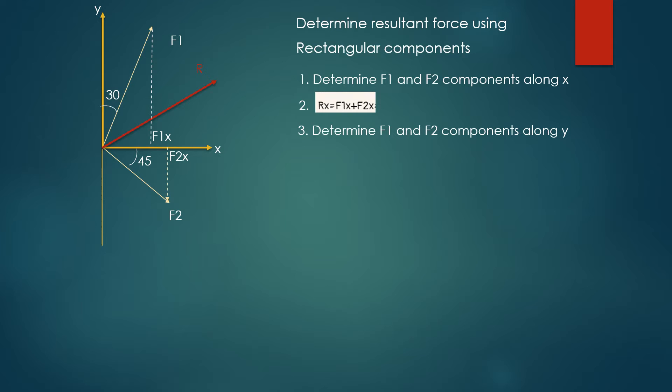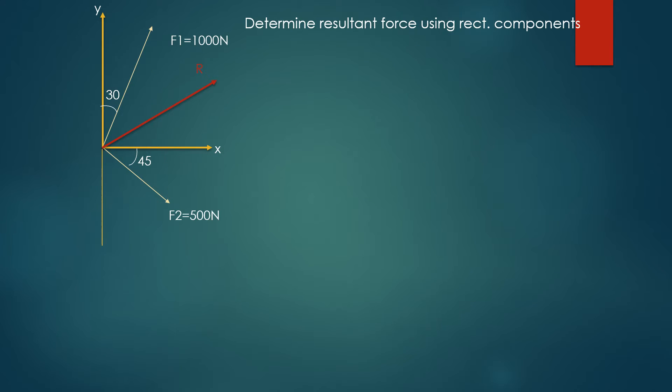Then we determine F1 and F2 components along the y-axis. Taking sign into consideration, you can write Ry equals F1y minus F2y. As you see, F1y and F2y are in opposite directions, so we use negative. The size of the resultant force can be found using the Pythagorean theorem.